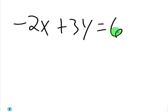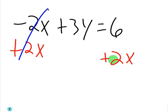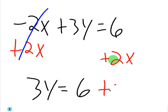Let's go ahead and do that — get you guys involved. What do you think the first thing you're going to do is to get y by itself? Add 2x. Always add or subtract before you divide. So we're going to add 2x. Remember, if you do something to one side of the equation, you have to do it to the other — since I did it on the left, I have to do it to the right. That's going to cancel on the left, so I'm going to have 3y equals 6 plus 2x.